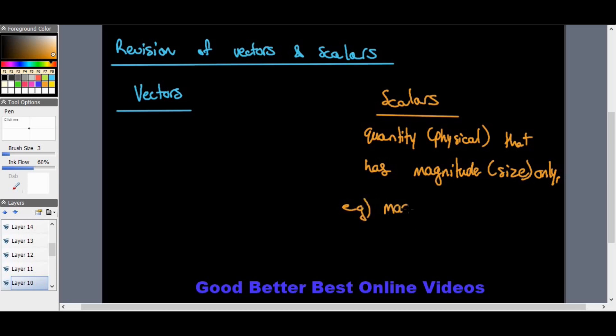Examples of scalars include mass, speed, and distance. For instance, my mass is currently 101 kilograms, speed is measured in meters per second, and distance in meters. They only have size or magnitude.